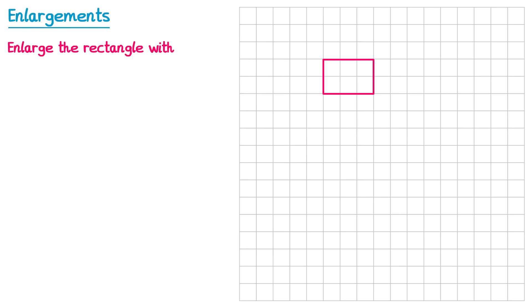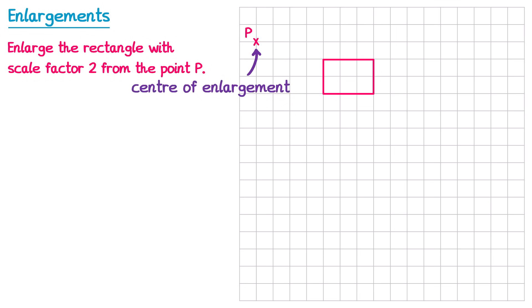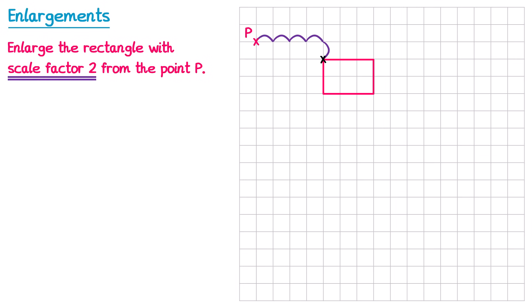This question says: enlarge the rectangle with scale factor 2 from the point P. They mark point P on the diagram. Point P is known as the centre of enlargement. To start, we mark a point on the rectangle — I'm going for the top left corner. We then consider the journey from P to that point: across 4 squares to the right and down 1 square. When doing an enlargement we repeat this journey so that the total number of times the journey has been taken equals the scale factor. Since the scale factor is 2, we need to do this journey twice in total.